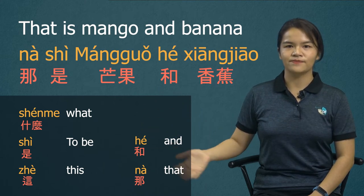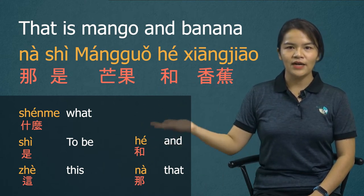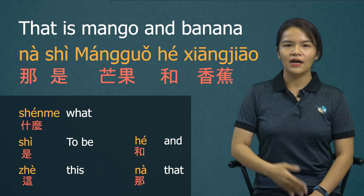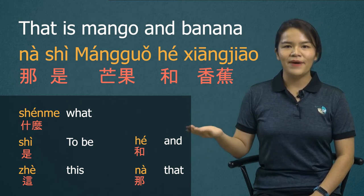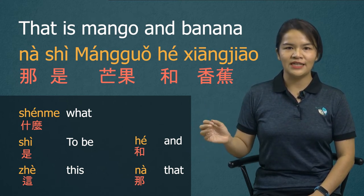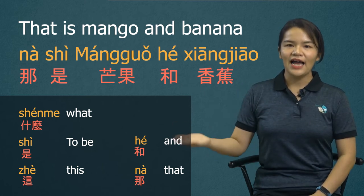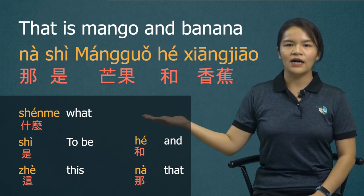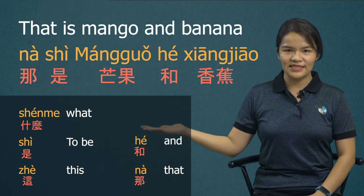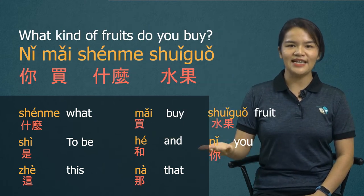那是芒果和香蕉 — that is mango and banana. 和 means 'and' and is mainly used to link nouns together. 那是芒果和香蕉.